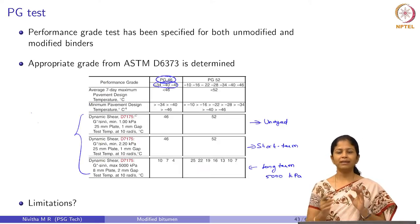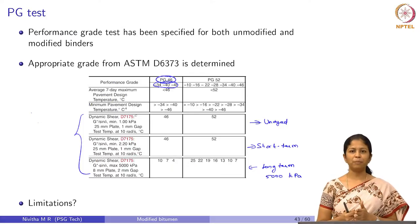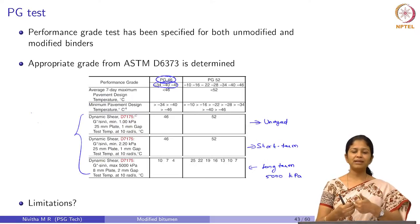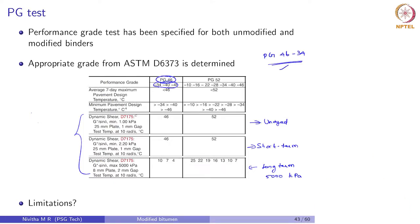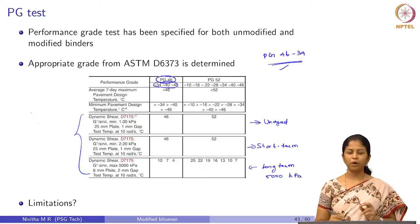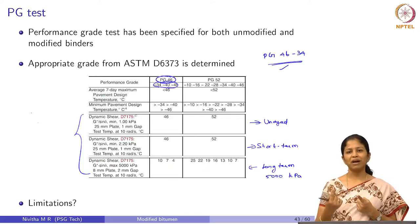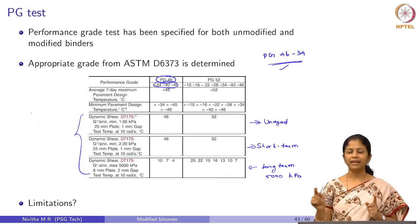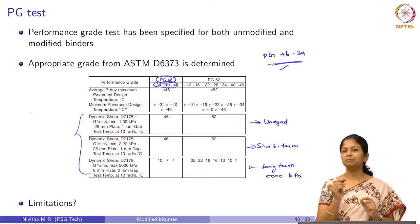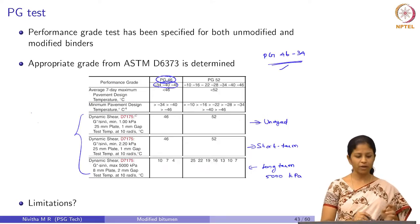The PG test will give us only the influence of the modifier on the improvement in stiffness properties — whether it has increased the high temperature grade or lowered the low temperature grade. But we will not get any information on the elastic recovery properties of the modified bitumen. For example, a PG 46 minus 34 material can have different elastic recovery properties. If we use an elastomer versus a plastomer to achieve this grade, the elastomer is expected to have more elastic recovery. Both can match PG 46 minus 34, so we need to quantify elastic recovery separately — that is why we have the MSCR test, designed specifically for modified bitumen.